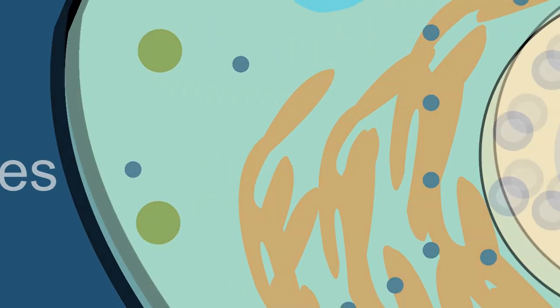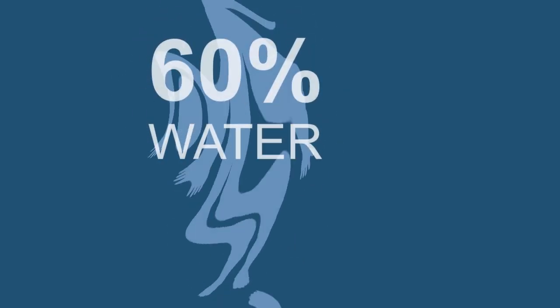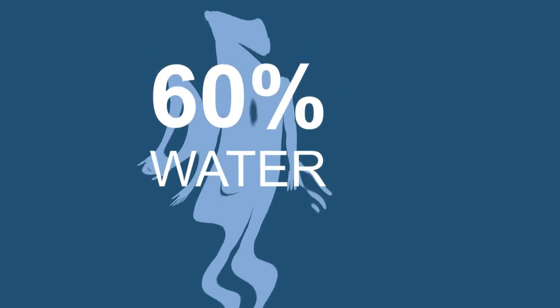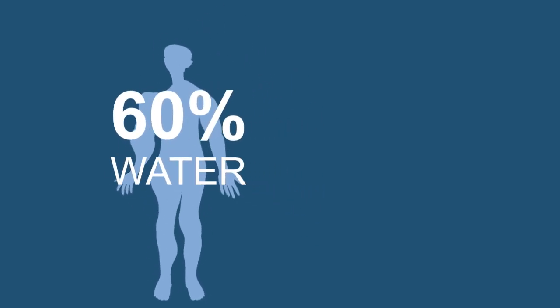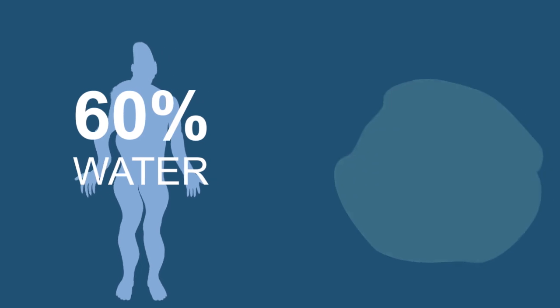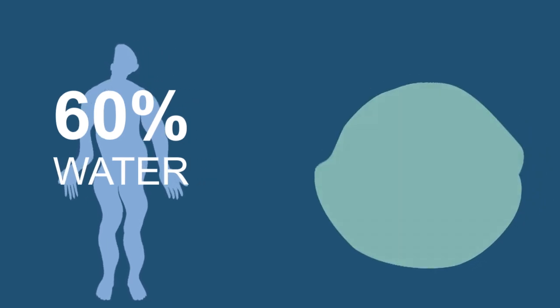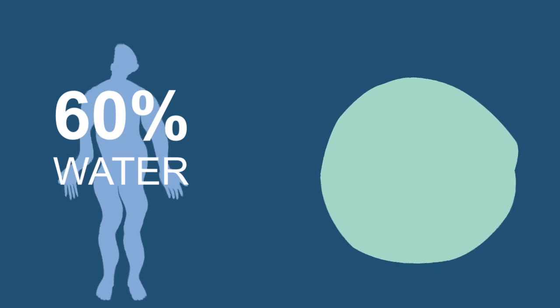Cytosol is made mostly out of water. You may have heard that the human body is as much as 60% water. This is true because the cytosol inside cells is made mostly of water. It is because the cytoplasm is mostly made of water that it doesn't provide very much support to the structure of the cell.